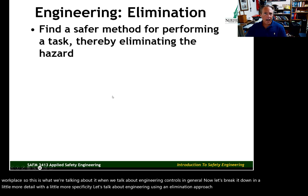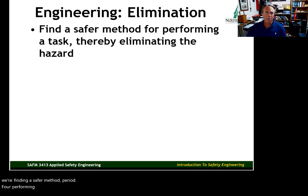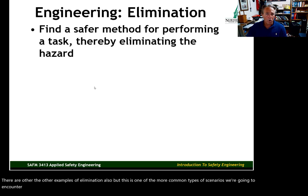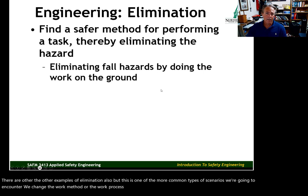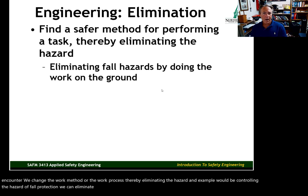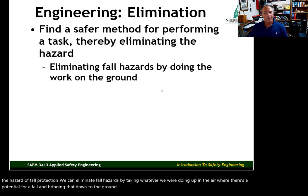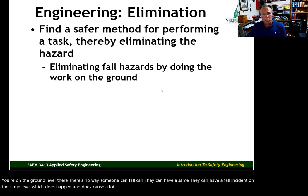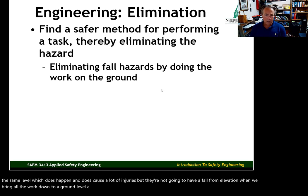With elimination, we're finding a safer method for performing a task, thereby eliminating the hazard. We change the work method or work process to eliminate the hazard. An example would be controlling the hazard of falls — we can eliminate fall hazards by taking work that was being done up in the air and bringing it down to ground level.